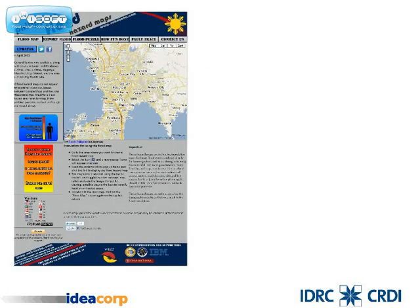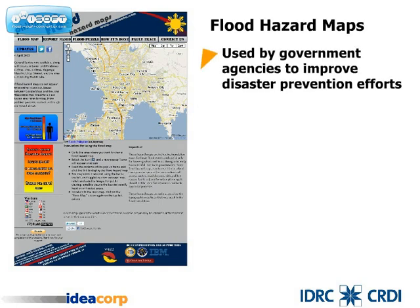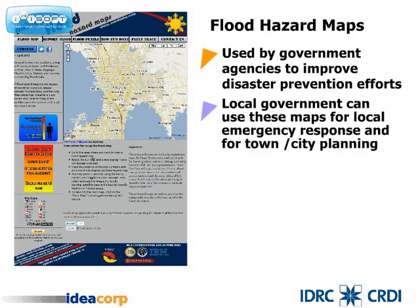The Flood Hazard Map Project is a great e-governance project in the Philippines. Flood Hazard Maps are used by government agencies to improve disaster prevention efforts. Local government can use these maps for local emergency response, such as evacuation and access routes, road closures, and siting of key rescue facilities, and for town or city planning.